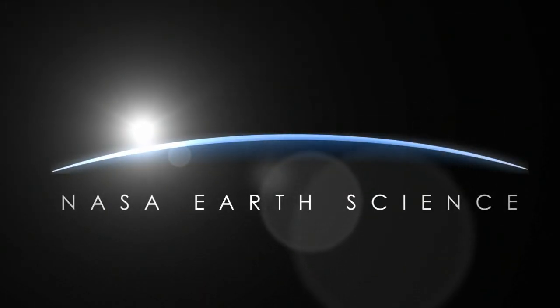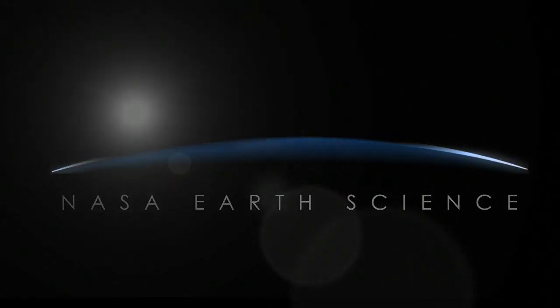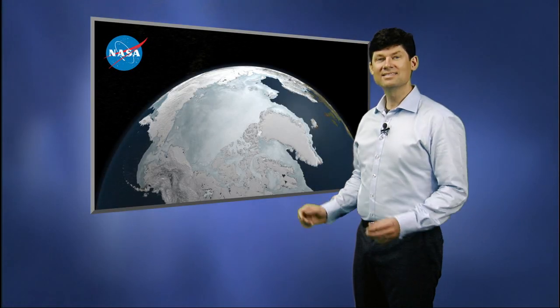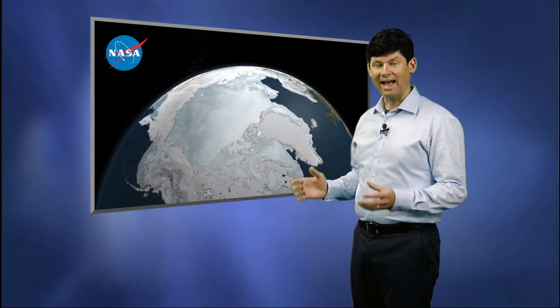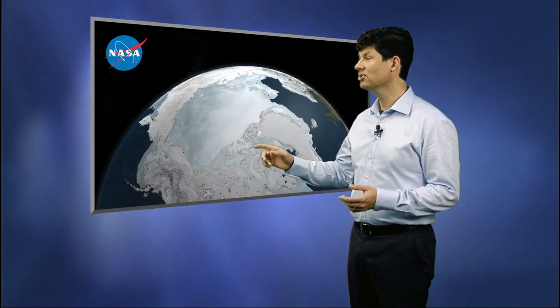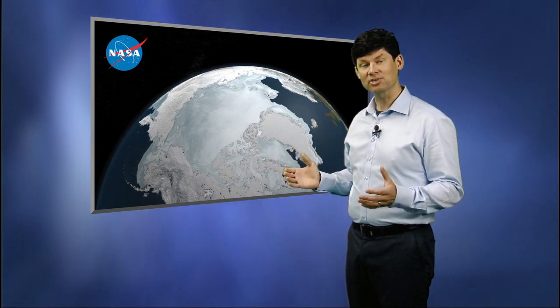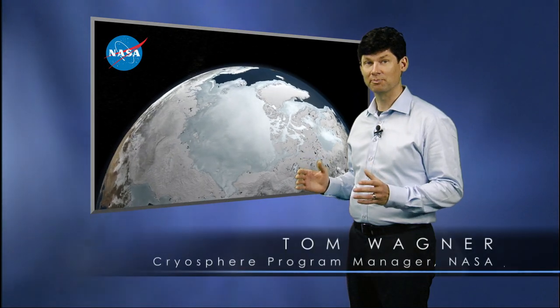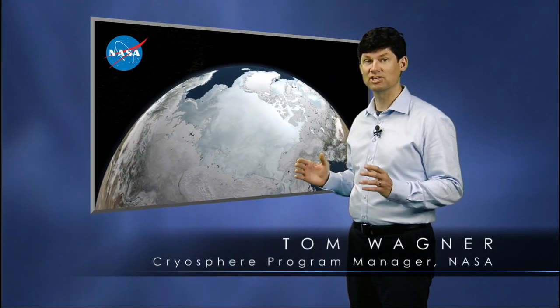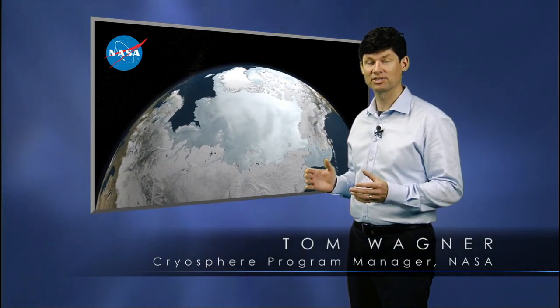Dr. Wagner, can you tell us exactly what sea ice is and what's new about it this year? Sea ice is the ice that forms on the ocean in the winter months. And the image you're looking at right here is a picture of the top of the planet — not a model, not a simulation, not an artist's impression, but actual data from a satellite showing us the sea ice cover on the Arctic Ocean.